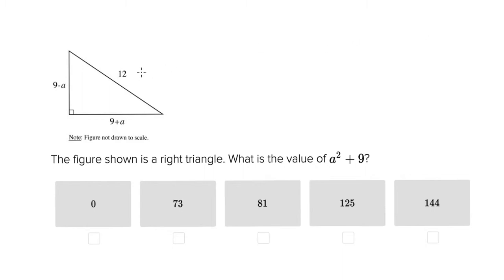So the first thing you want to do is circle where the unknowns are. If you see here, what you don't know is the value a in both of the legs. So we realized very quickly that we're going to need to find out the value of the legs to figure out what a is and hopefully be able to solve for the value a squared plus 9.